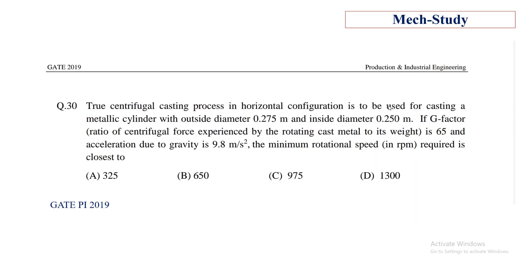Let me read the question first. True centrifugal casting process in horizontal configuration is to be used for casting a metallic cylinder with outside diameter 0.275 meter and inside diameter 0.250 meter. If G-factor is 65 and acceleration due to gravity is 9.8 meter per second square, the minimum rotation speed required is what we have to find. Here the G-factor is the ratio of centrifugal force experienced by a rotating cast metal to its weight.